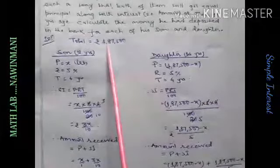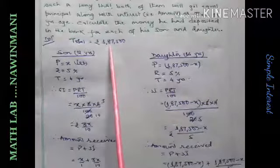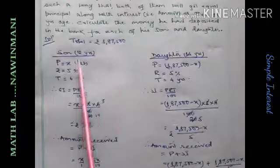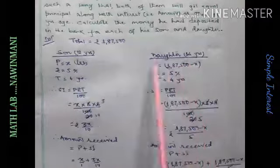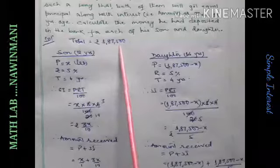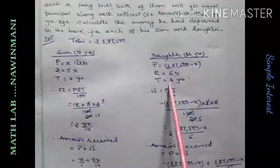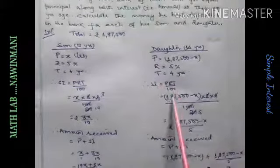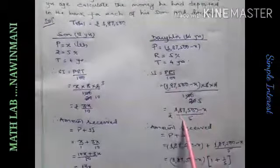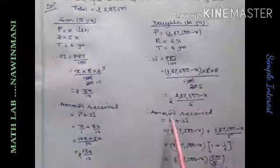Now his mother's total money is 1,87,500. If we give x rupees to son, remaining money should go to daughter. So, daughter is 14 years old. For daughter how much deposited? 1,87,500 minus x rupees deposited. Rate is same. Time 4 years.